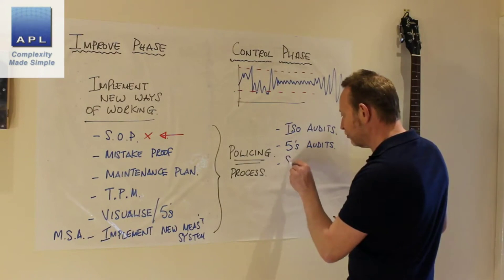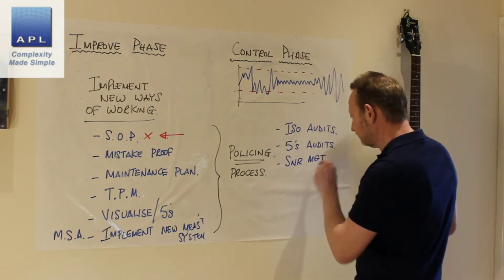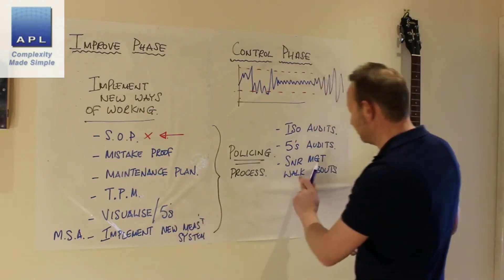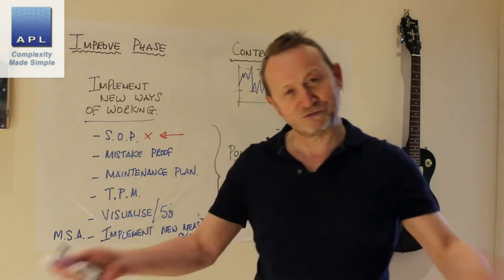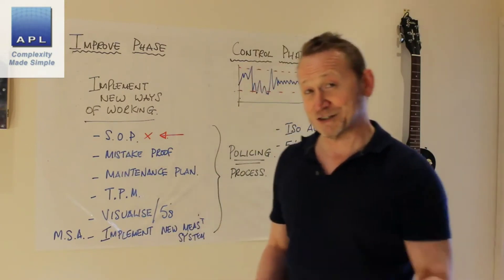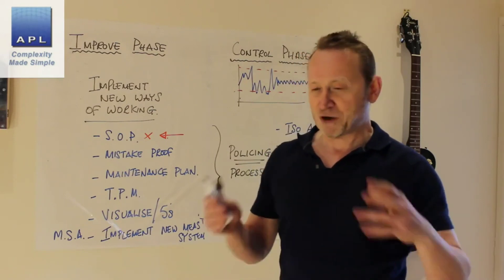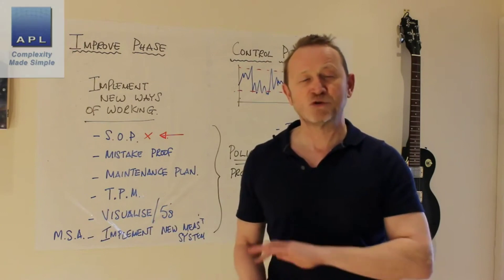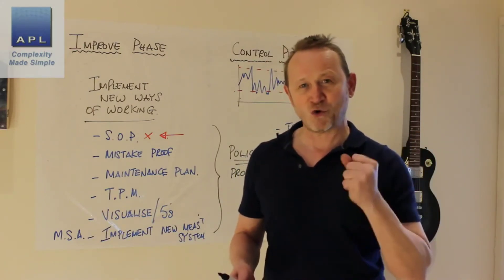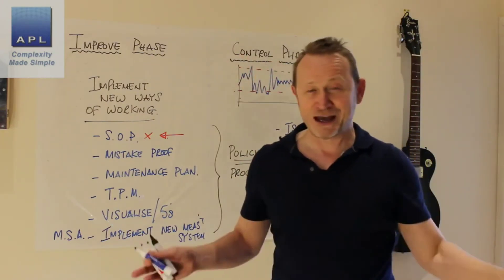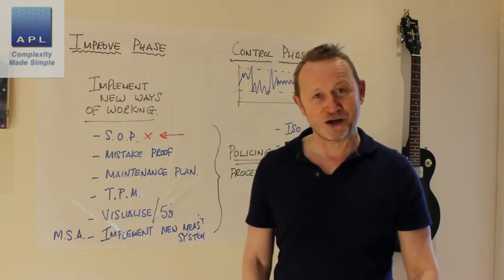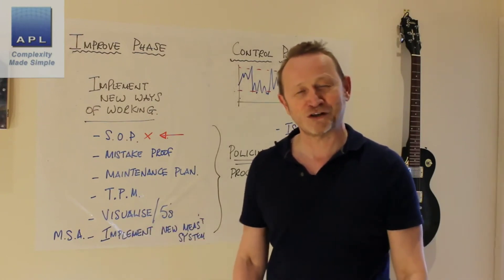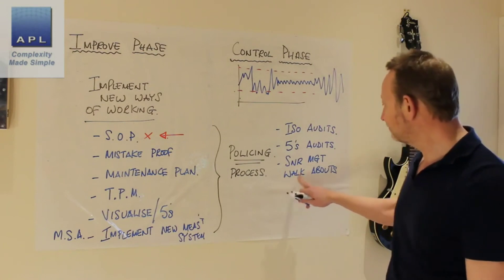They could be less formal things, such as senior management walkabouts. When senior managers walk around, if you've visualized the standards and you're not using them, senior managers should pick that up. When I worked at Salmi, my managing director would constantly walk the floor. He would pick up the fact that we weren't following the rules. He would rarely talk to me about output — he would always talk to me about control. He didn't care how many we'd made that day; he knew that if I wasn't following the rules, that's why I hadn't made targets. He concentrated on the control aspect of the production line.